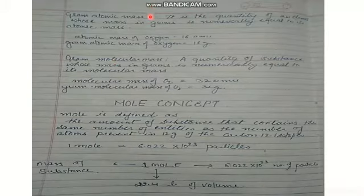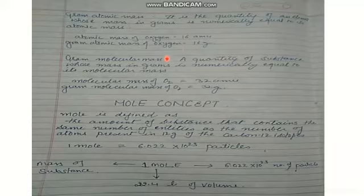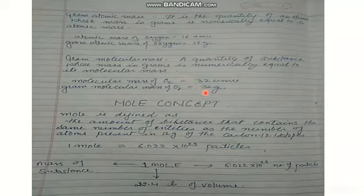Gram atomic mass is the quantity of an element whose mass in grams is numerically equal to its atomic mass. For example, the atomic mass of oxygen is 16, so its gram atomic mass is 16 grams. Gram molecular mass is the quantity of a substance whose mass in grams is numerically equal to its molecular mass. The molecular mass of oxygen is 32 AMU, so its gram molecular mass is 32 grams.